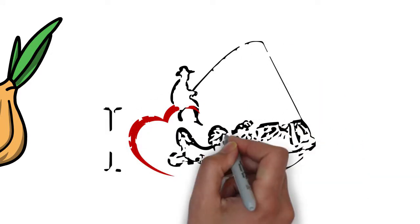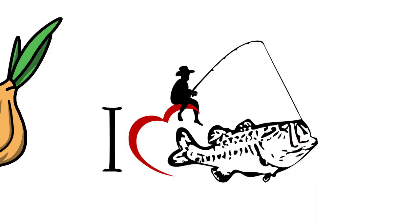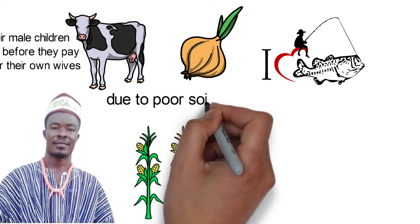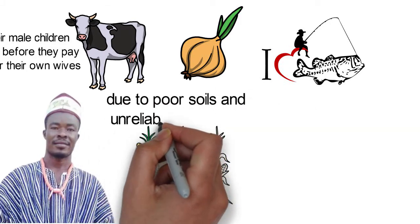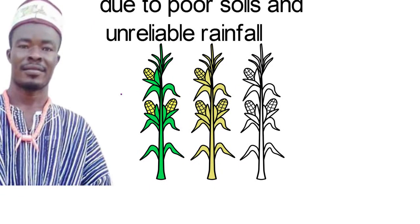Some of them are fish farmers who particularly specialize in tilapia and mudfish. Despite their small farms and low yields due to poor soils and unreliable rainfall, the Kasena Nankana people take their farming seriously and passionately all the same.